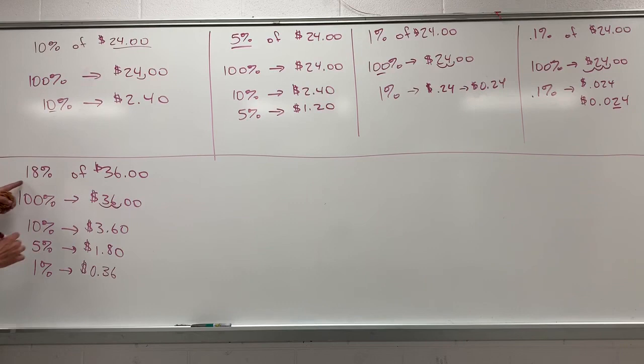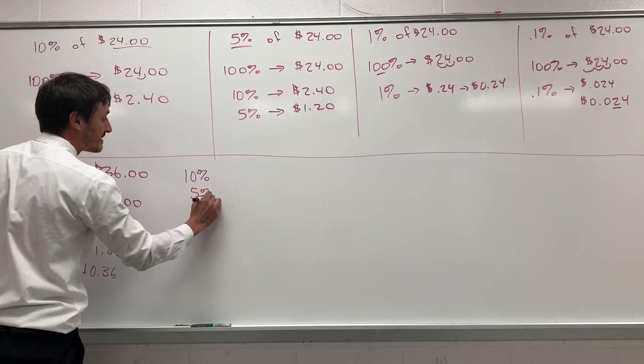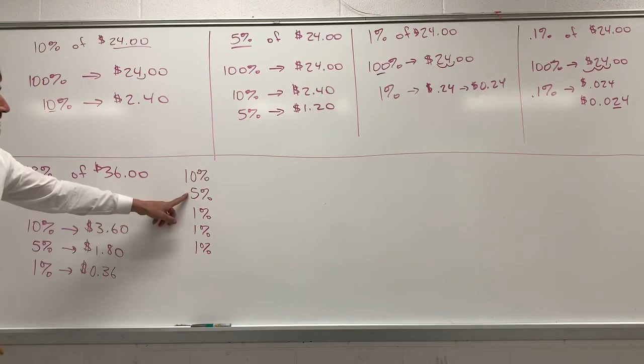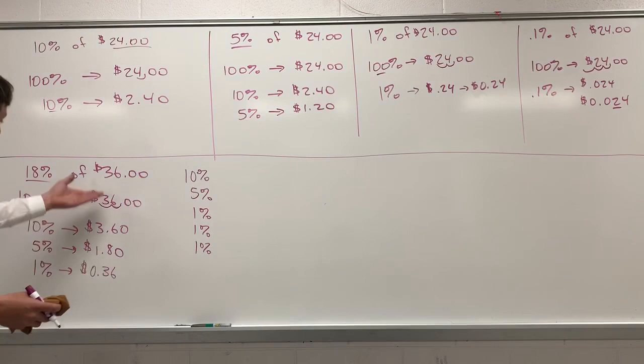Now, to build 18% is to notice that we can use the 10%, the 5%, and the 1% as building blocks. So, to build 18%, we're going to need a 10%, a 5%, a 1%, a 1%, a 1%, and a 1%. Notice that 10 and 5 make 15%, 16, 17, and 18%, where each of these percentages has a specific dollar value.